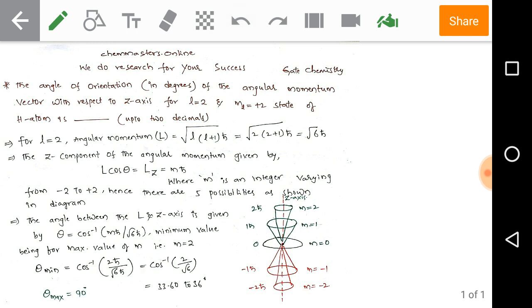If we need to calculate maximum angle of orientation of angular momentum vector to the Z-axis, we can simply take it as M equals 0. Whenever we take M equals 0, that means simply we get 90 degrees. We have the angular momentum vector angle is highest or maximum with Z-axis.